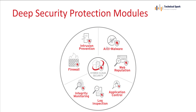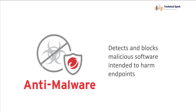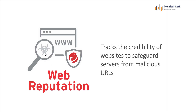These are the actual modules of Deep Security that we are going to work with: first is anti-malware, second is web reputation, third is application control, fourth is log inspection, fifth is integrity monitoring, and sixth is firewall and intrusion prevention. The anti-malware module detects and blocks malicious software such as viruses, trojans, spyware, ransomware, and other applications intended to harm your endpoint. Anti-malware protection can occur in real time, on demand, as well as on schedule.